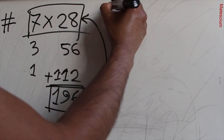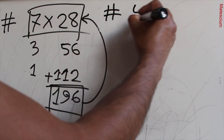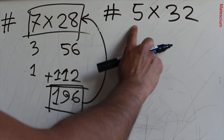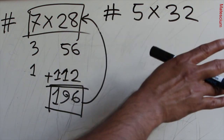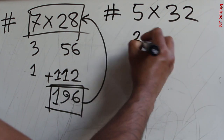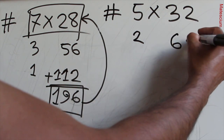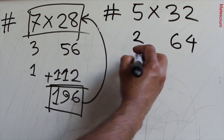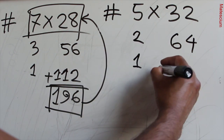Let's make another example to make it clear. Let us consider 5 multiplied by 32. Make half of 5 — half of 5 means 2.5, we do not consider the fractional number, just write 2 here. And make double of 32 — double of 32 means 64. Then half of 2 means 1, and double of 64 means 128.